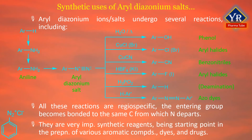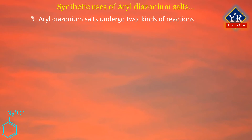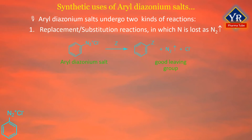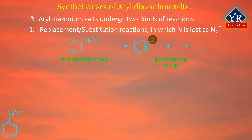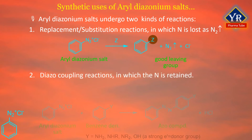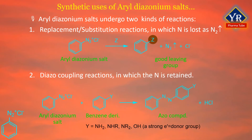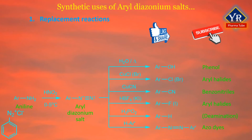Diazonium salts are very important synthetic reagents, serving as starting points in the preparation of various aromatic compounds, dyes, and drugs. Aryl diazonium salts undergo two general types of reactions: first, replacement or substitution reactions, in which nitrogen is lost as N₂ gas and another atom or group attaches to the ring; and second, diazo coupling reactions, in which the nitrogen is retained in the product, forming an azo compound containing a nitrogen-nitrogen double bond.